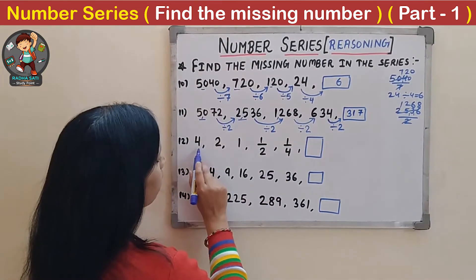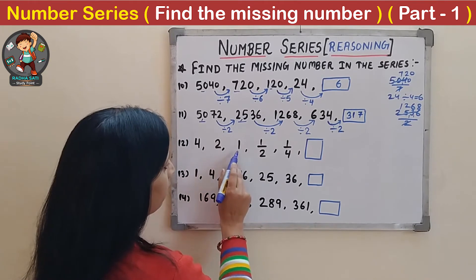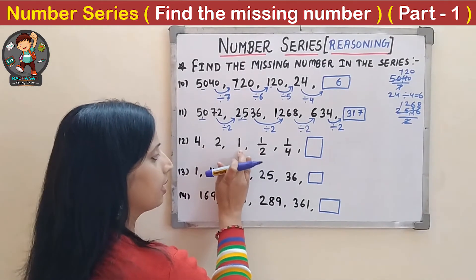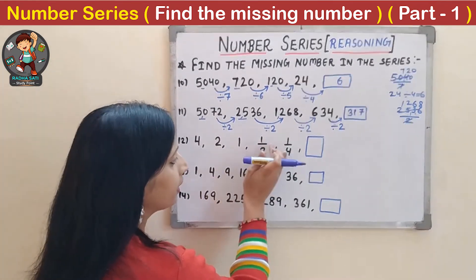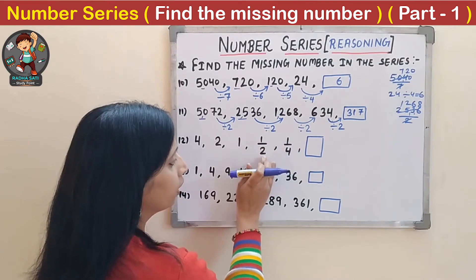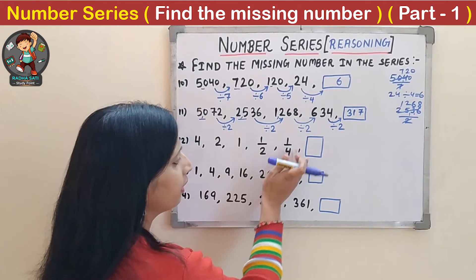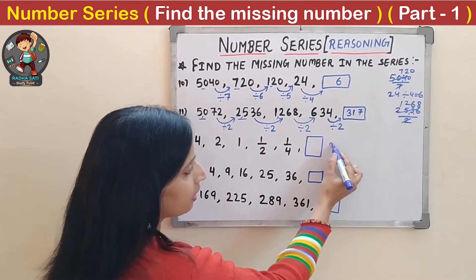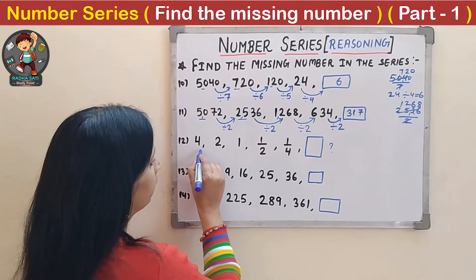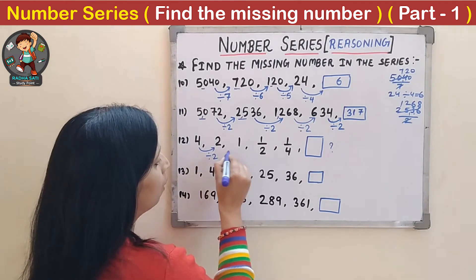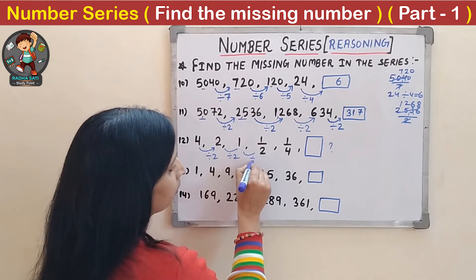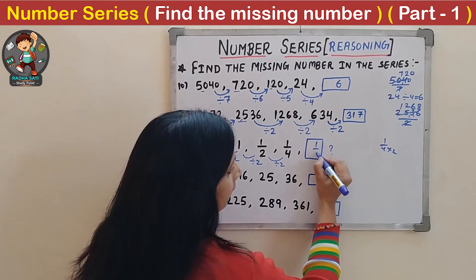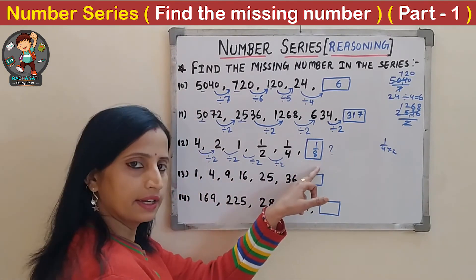Twelfth question: 4, 2, 1, 1/2, 1/4, _. Each number is half of the previous: 4 → 2 → 1 → 1/2 → 1/4. Division by 2 continues into fractions. Half of 1/4 is 1/8. The missing number is 1/8.